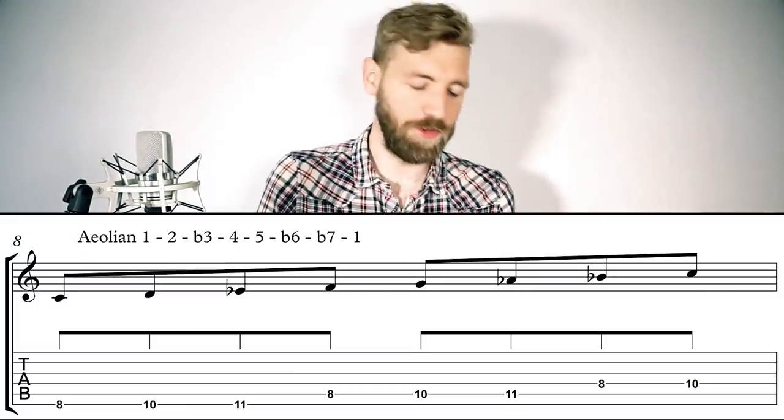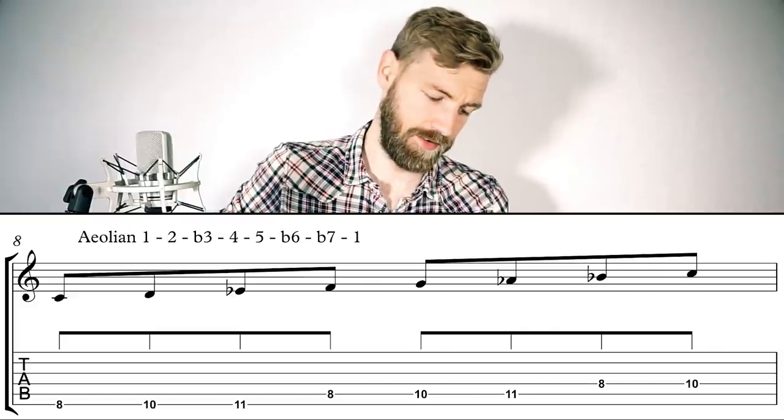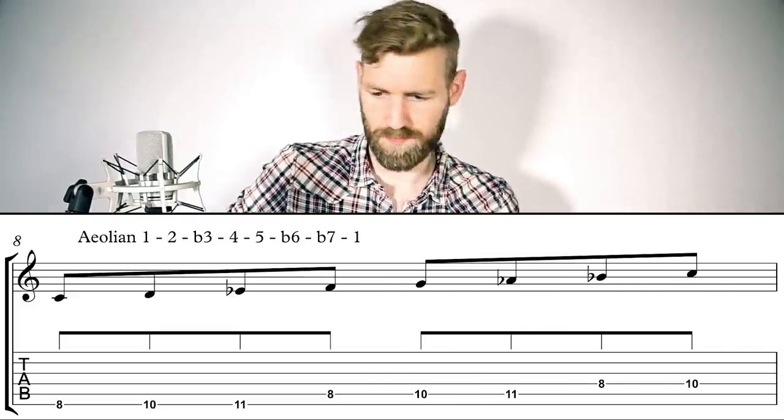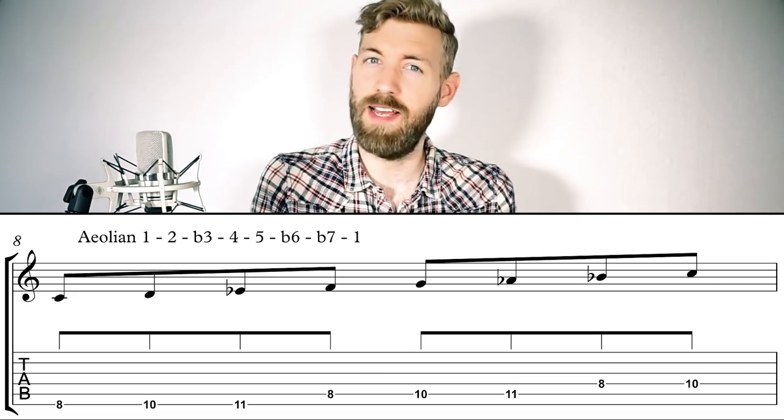The 6th one is Aeolian, or just natural minor. The riff I chose for this mode is 'Ain't Talkin' About Love' by Van Halen. This riff is made up of 3 chords — basically an A minor, F and a G. It touches all the notes of A Aeolian with those 3 chords.